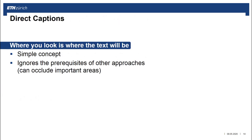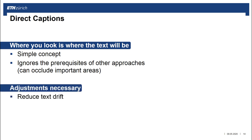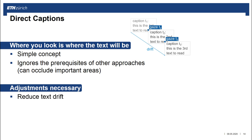Direct captions follow the simple principle: where you look is where the text will be. This technique ignores the video content and can occlude important areas. Pilot testing revealed that some adjustments are necessary. First, we need to avoid text drift. If we align the top left corner of a caption with a gaze position, one can start reading immediately. However, when you finish reading a text, a new caption will appear at this position, resulting in drifting captions, which might become annoying. We can reduce this effect by aligning the center of a caption with the current gaze position.